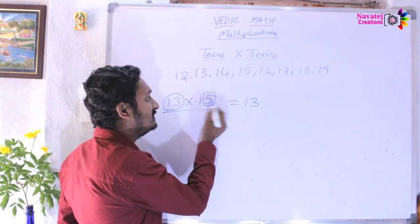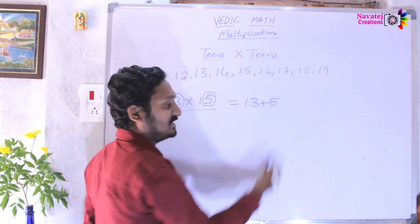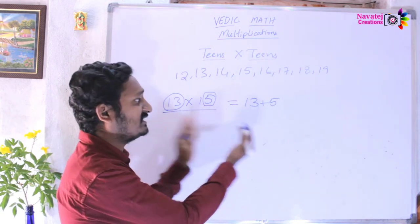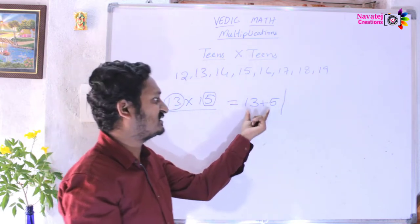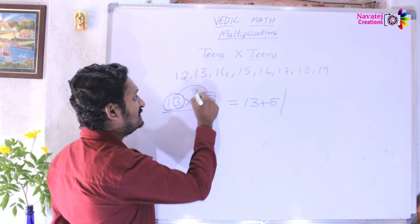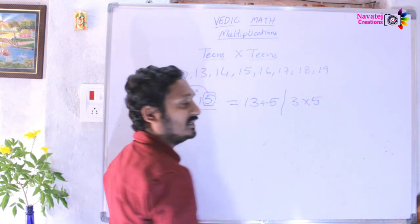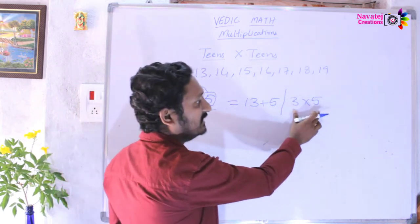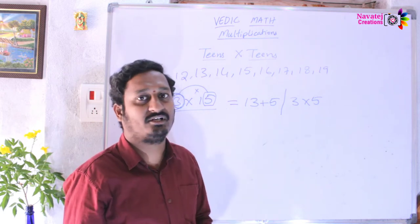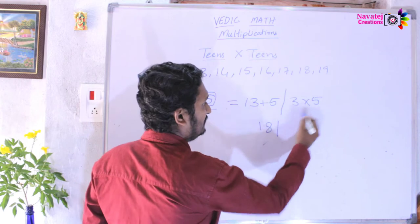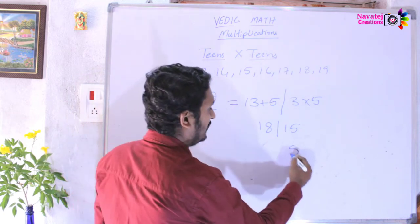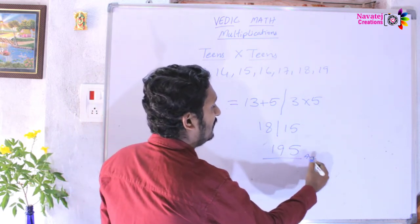We add the ones-place number: 13 plus the ones-place of 15, which is 5 — so 13 plus 5. This is the first part of the answer. The second part is the ones-place digits multiplied: 3 into 5. So 13 plus 5 is 18, and 3 times 5 is 15. Apply the balancing method — drop ones, carry tens — giving 195 as the answer.